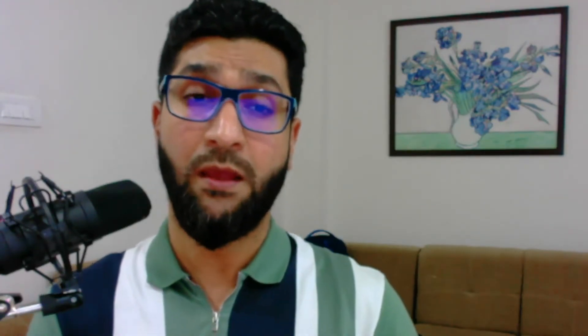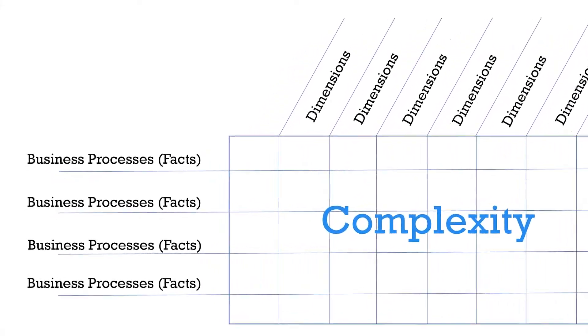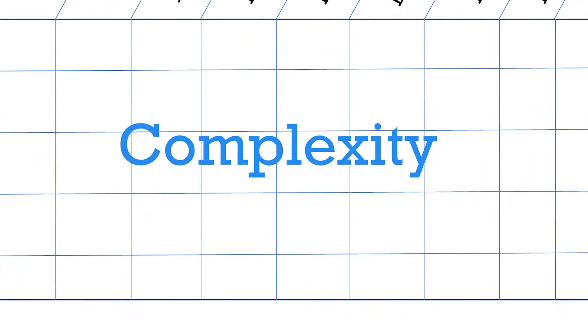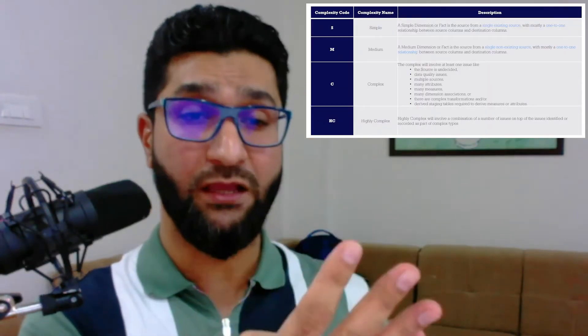Let me jump into the tool itself and walk you through its usage. The tool is divided into three sections. Section one on the left-hand side — the rows — showcases the business processes, i.e., the fact tables. On the top, the columns display the dimensions or confirmed dimensions. In the center is your complexity metric. There are four complexity categories: Simple, Medium, Complex, and High Complex.